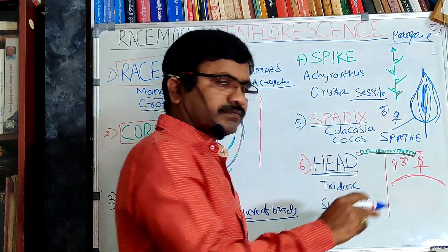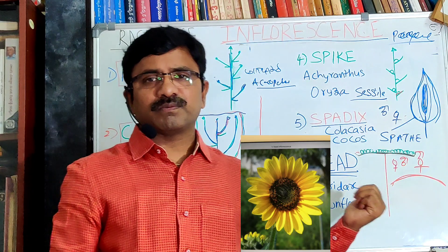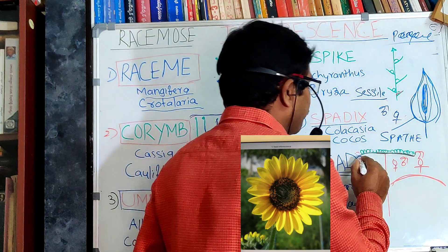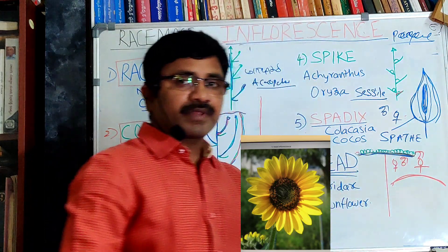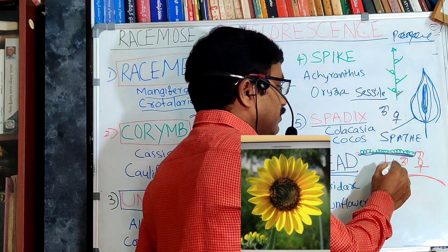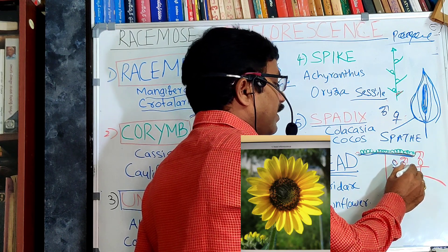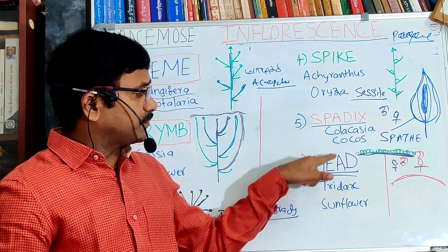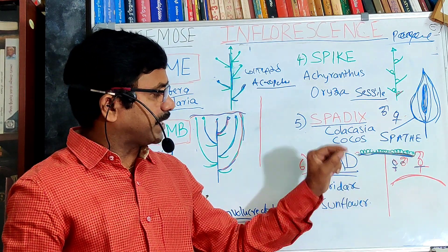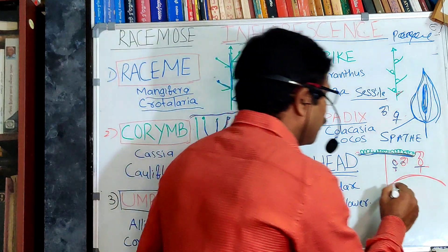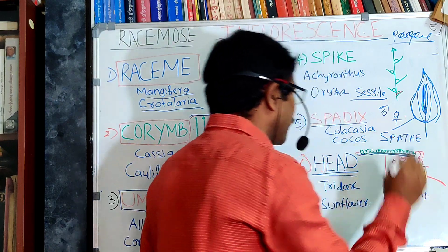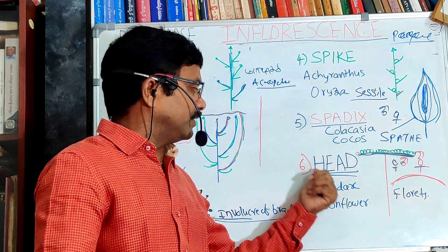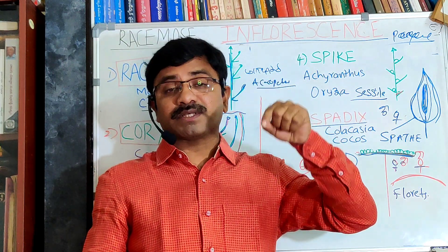The sixth type is head inflorescence, considered the most advanced kind. In head inflorescence, the peduncle is highly condensed and appears as a flattened shape. It bears unisexual and bisexual sessile flowers arranged on this condensed peduncle. The tiny flowers arranged on the peduncle are called florets. Head inflorescence is found in Tridax, Helianthus annuus (sunflower), and is the most advanced type, characteristic of the Asteraceae family.